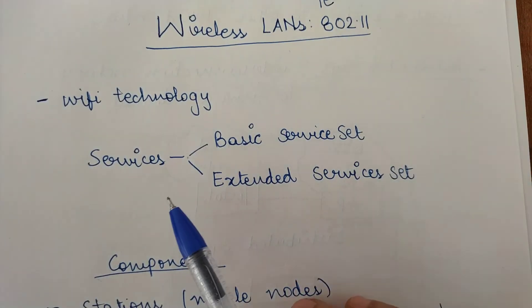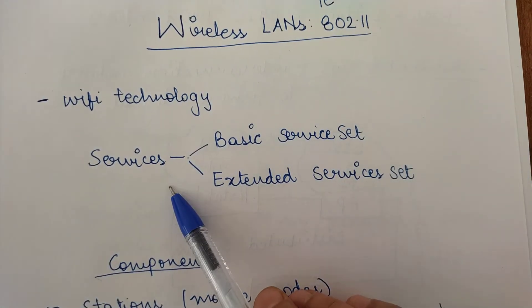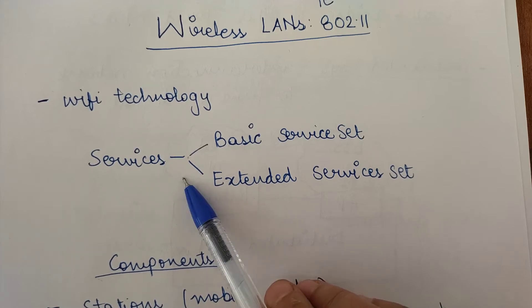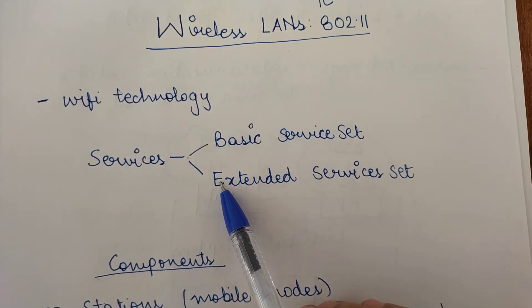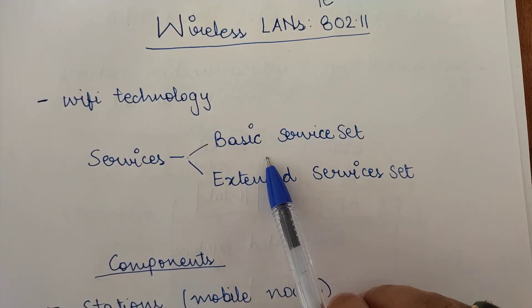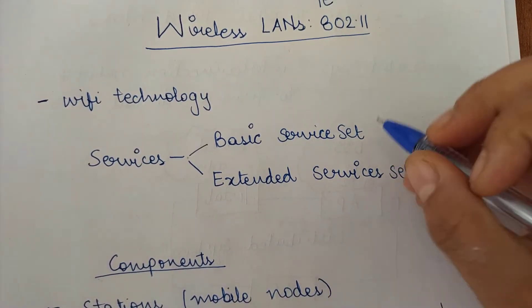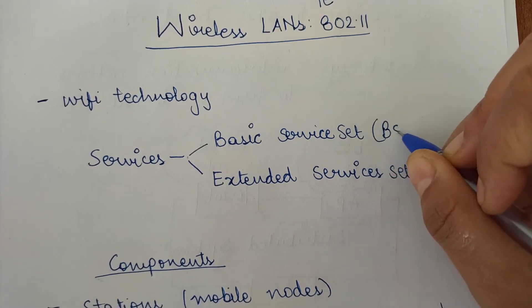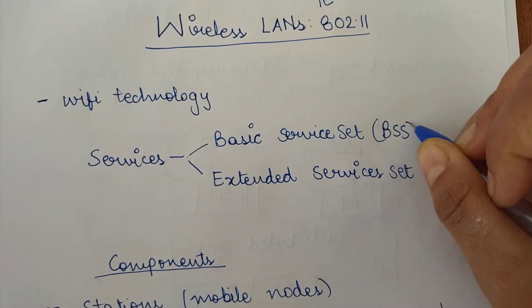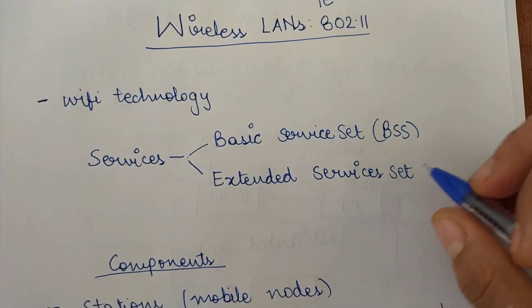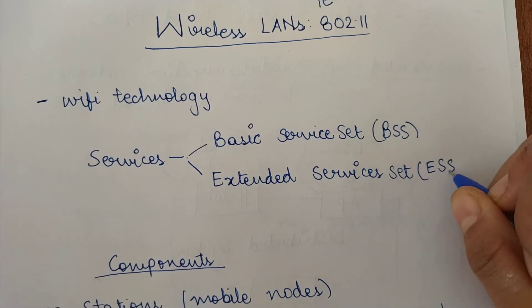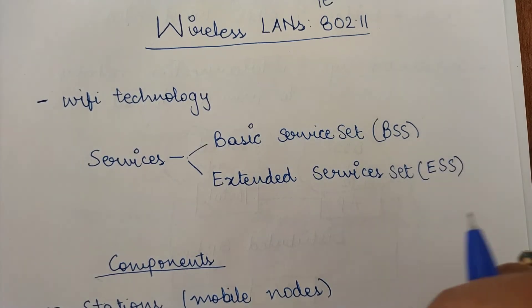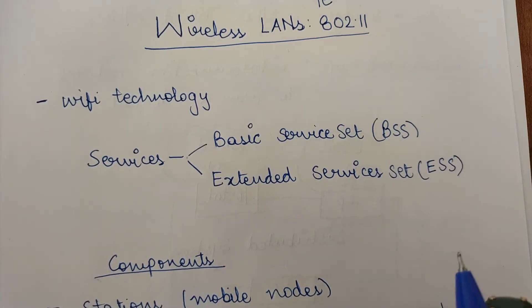A wireless LAN provides you with two kinds of services: one is the Basic Service Set, also known as BSS, and the other is the Extended Service Set, also known as ESS.